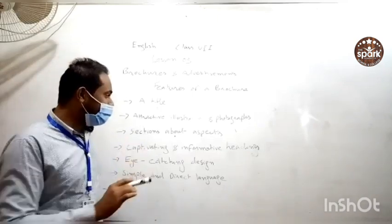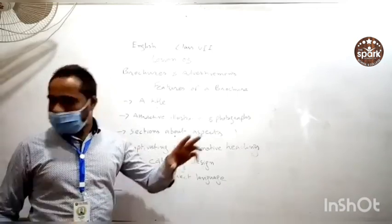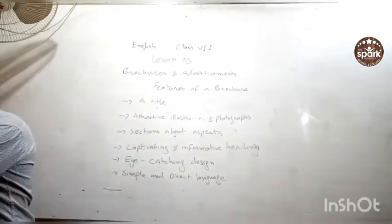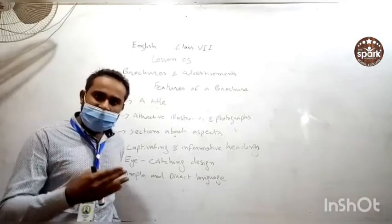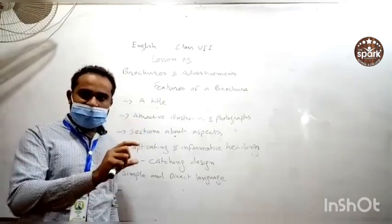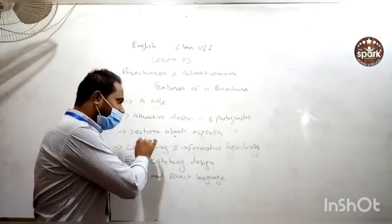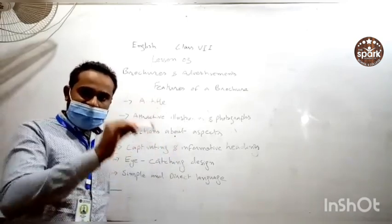The third one is sections about aspects. In advertisements or brochures, there are many subheadings and subsections mentioned, so we have to organize those things into sections.